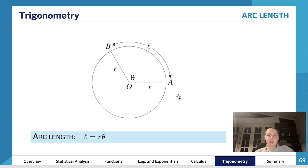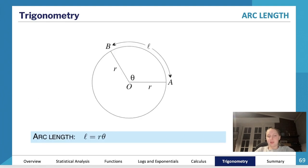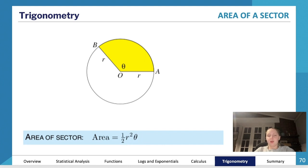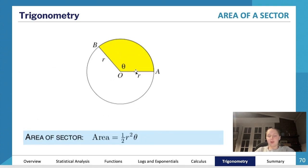Another formula introduced is arc length: ℓ = rθ, where θ must be in radians. Super important — if θ isn't in radians, you need to convert it before using this formula. Similarly, the area of a sector is ½r²θ, where θ is again in radians. Remember these two formulas when you need to find the arc length or sector area of a circle.